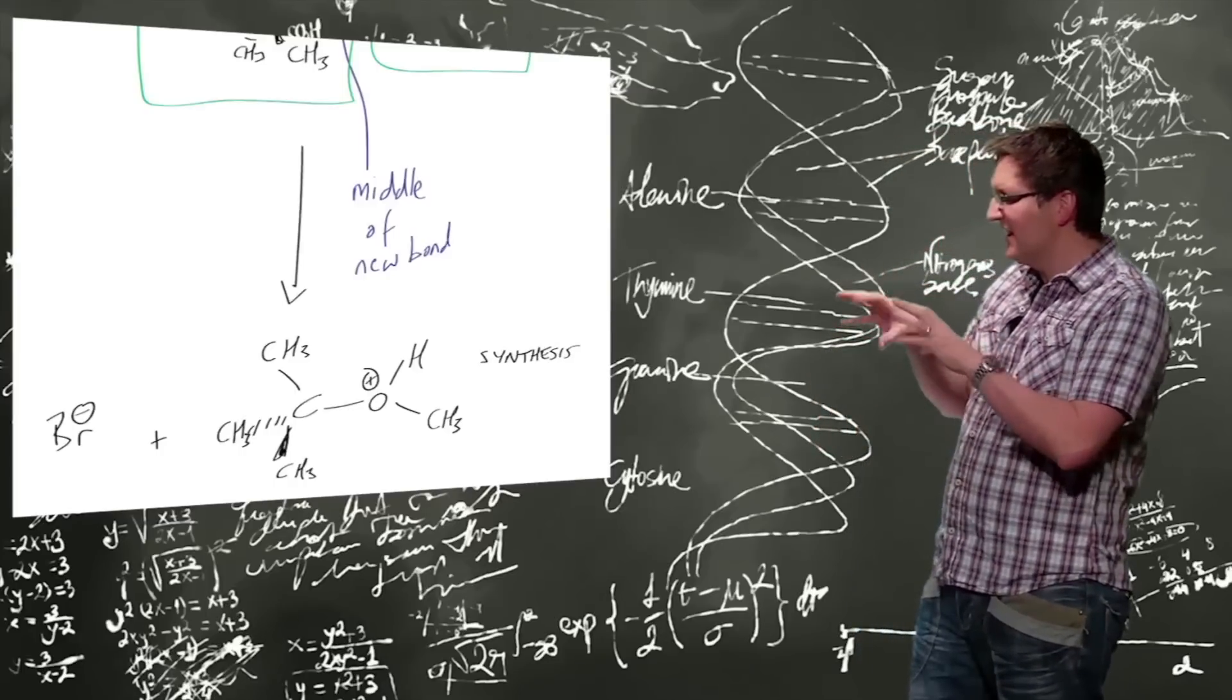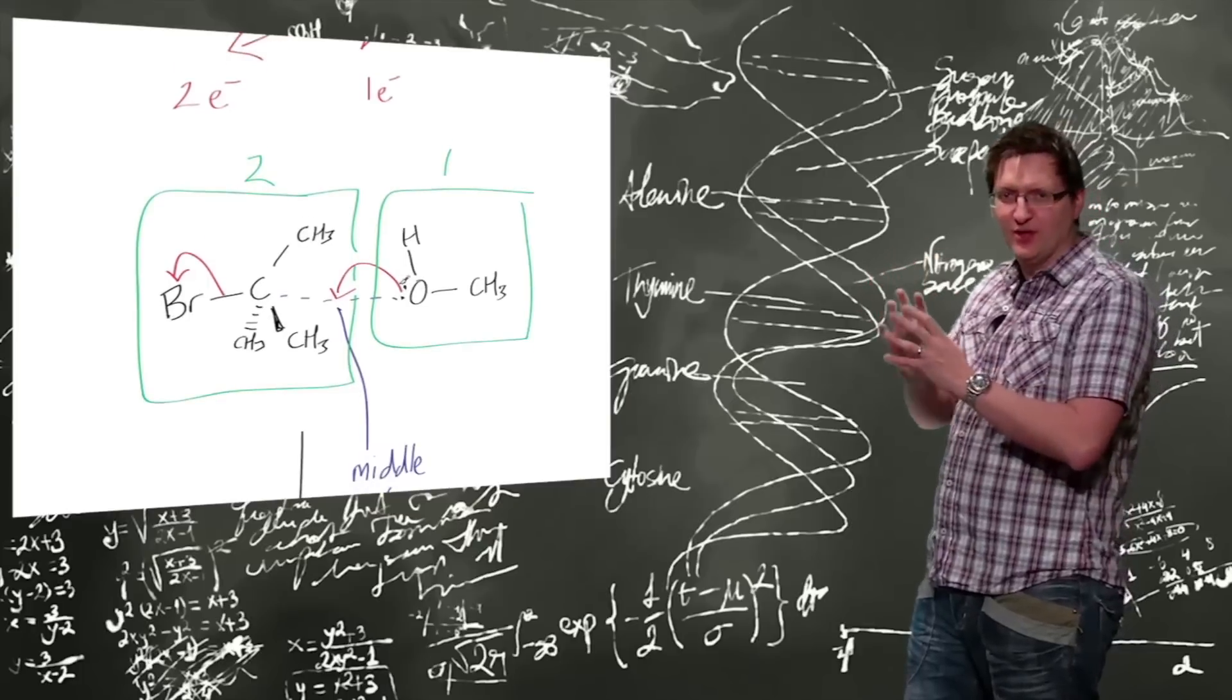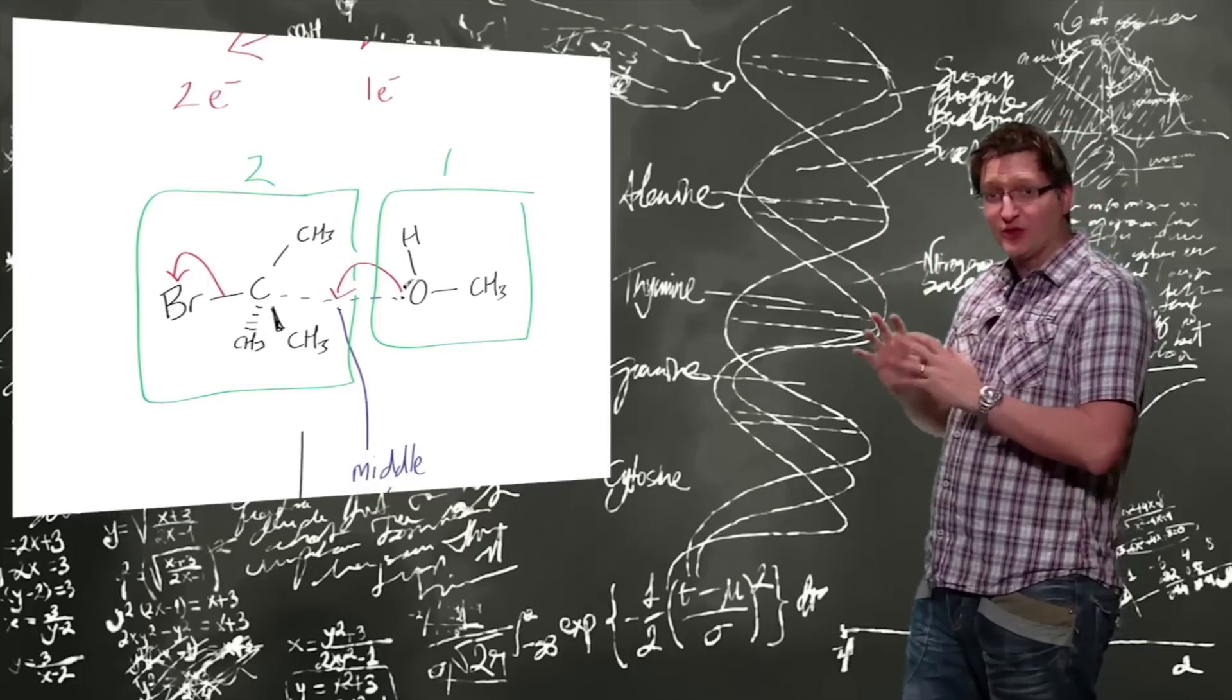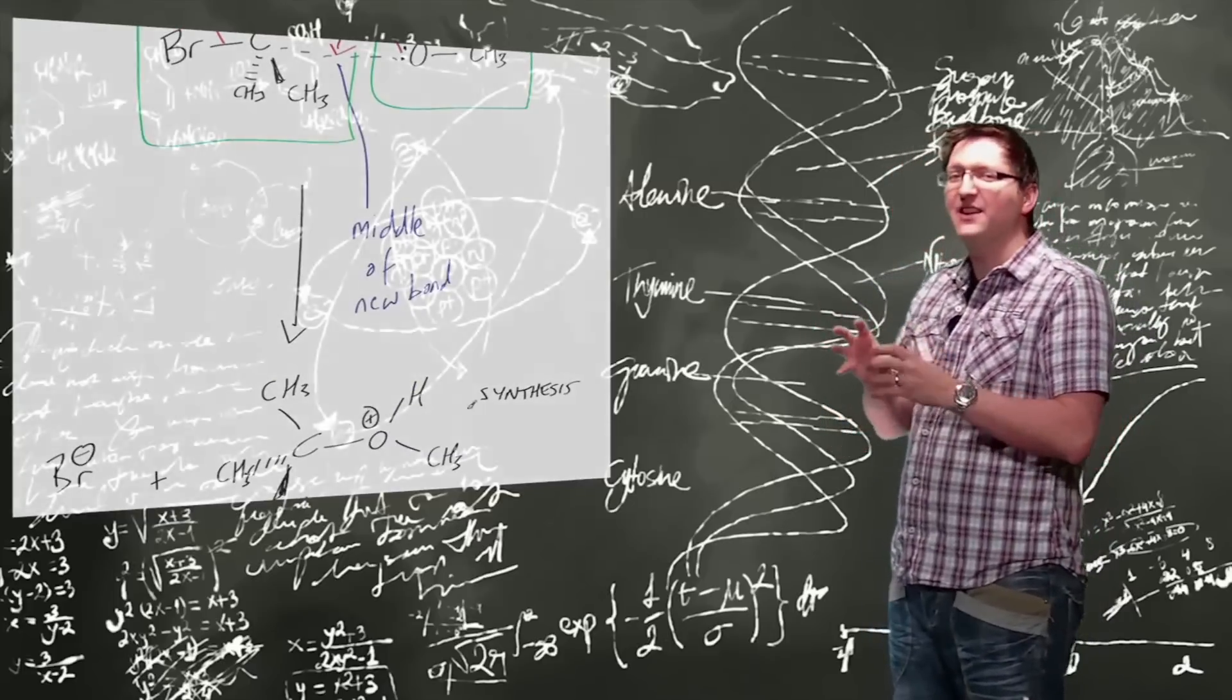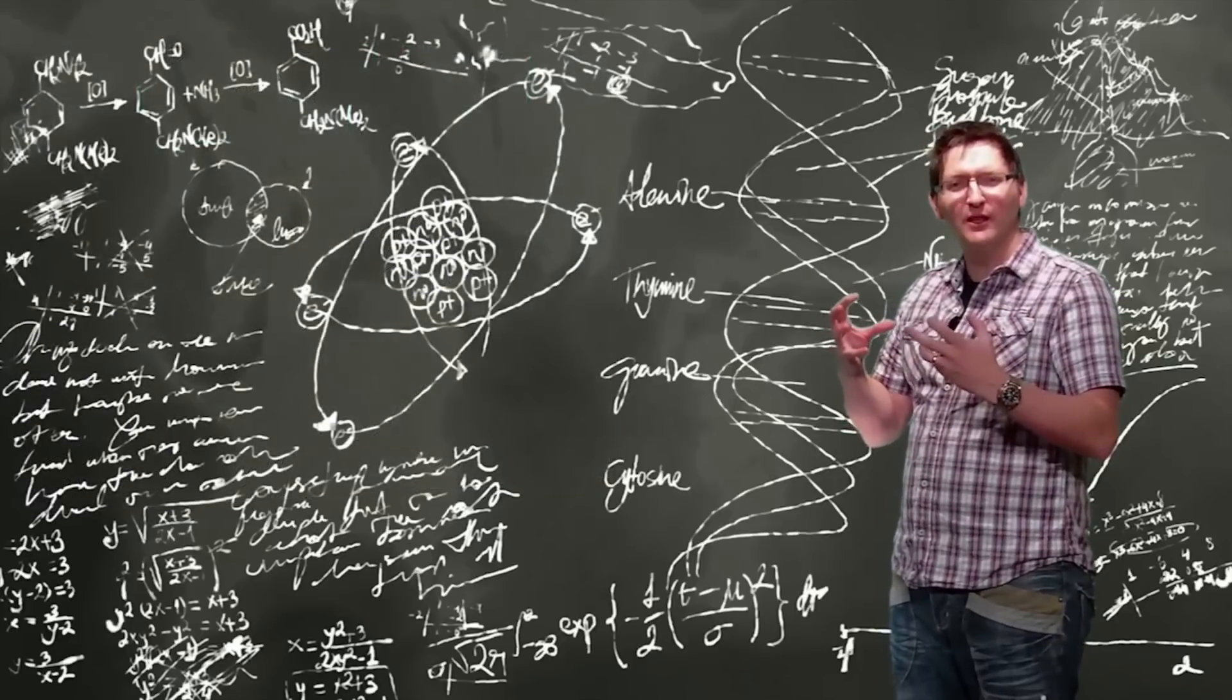So this kind of concept, if you will, these curly arrows, is what's called organic chemical synthesis. We're actually synthesizing a new molecule from two molecules.